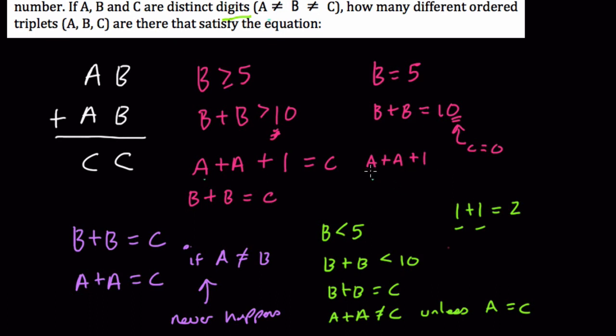So if A is not equal to B, even if it was equal to B, if A was equal to B, in this case, A plus A would be 5 plus 5 plus 1. That would be too large. It would be a different number. It wouldn't be C. If A was, let's say, I don't know, 2.